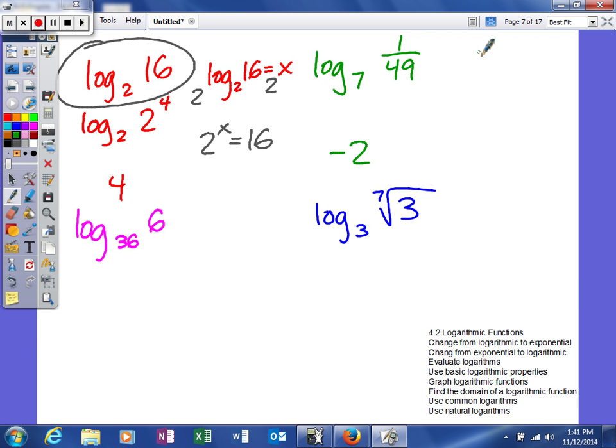So again, what we're really thinking about when we're looking at this is 7 to some power is equal to 1 over 49. And because we get a fractional answer, we know our exponent's negative. And then 7 to what power will give us 49? It's 2. So it's negative 2.